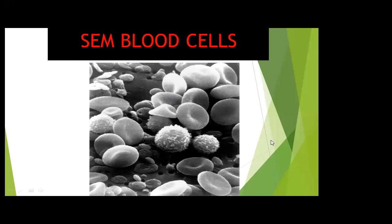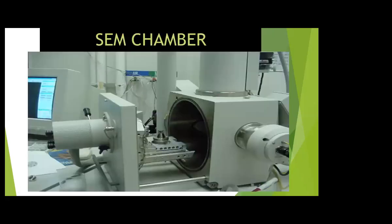This is the scanning electron microscope image of blood cells — we can see the biconcave structure of red blood cells here in a beautiful three-dimensional image. We will stop here today and continue with other aspects like sample preparation and general and specific applications of scanning electron microscopy in the next class. Thanks for joining. Continue enjoying the learning process.